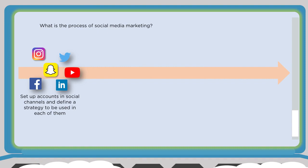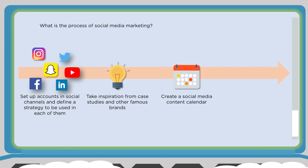Pick and choose your social media channels and find a strategy for each, because if you have a video it may work on YouTube or Instagram but may not work for LinkedIn and Twitter. Pick and choose the asset, the strategy, and align it with the appropriate platform. Take inspiration from case studies and other famous brands — look at big companies, medium-sized companies, and even competitors to see what they're posting and what engagement they're getting. Always seek out what others are doing on social.